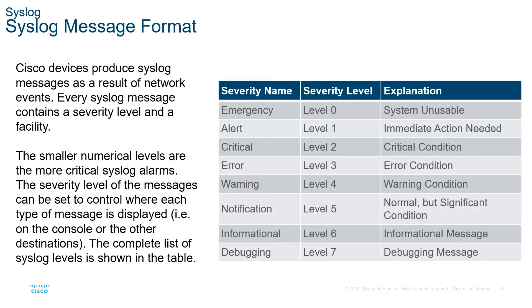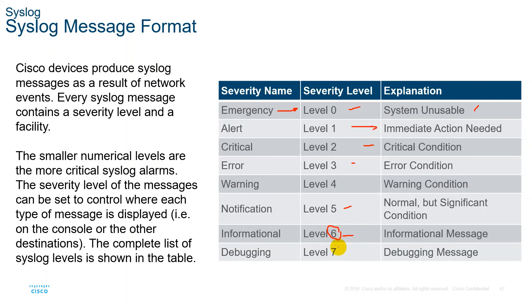The syslog message format includes severity levels: Level 0 (system unusable), Level 1 (alert — immediate action required), Level 2 (critical), Level 3 (error), Level 4 (warning), Level 5 (notification), Level 6 (informational), and Level 7 (debugging — seen when debug is enabled on CLI). Most commonly you'll see levels 4, 5, and 6 for warning, notification, or informational messages.